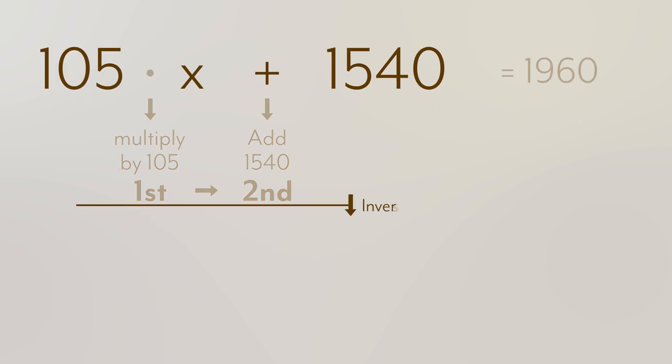The order of operations tells us that we will do the multiplication first and the addition second. Now, to invert these operations, we will unravel them in the opposite order. That is, we will subtract 1540 and then divide by 105.